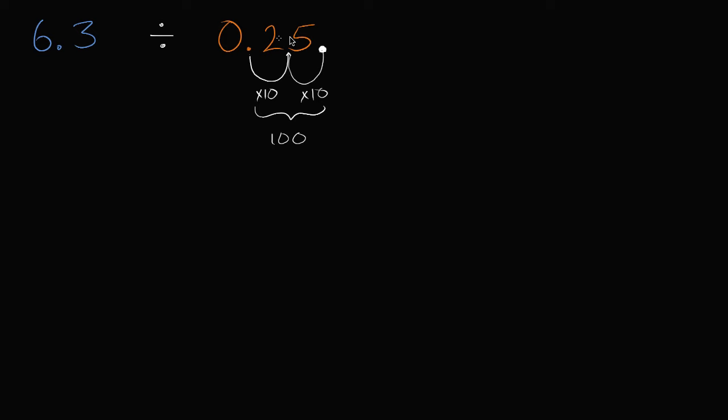Of course, I can't only do it to 0.25. That would change the value of this entire expression. I also have to do it to 6.3. If I move the decimal to the right twice over here to get a whole number, I gotta move the decimal twice to the right over here. So if I move it to the right once, I get 63. That's one multiplication by 10.